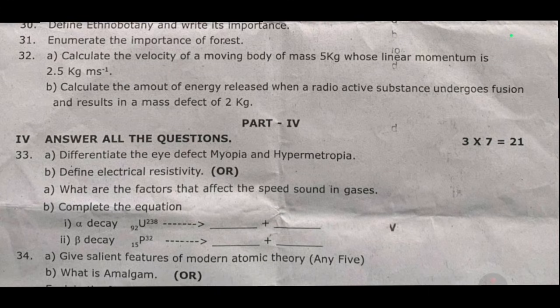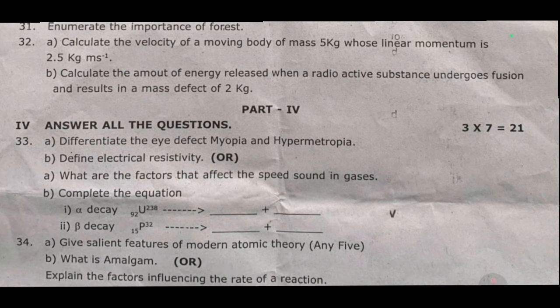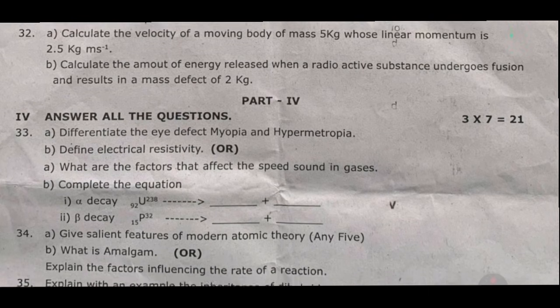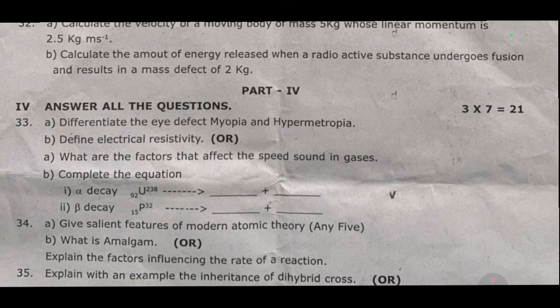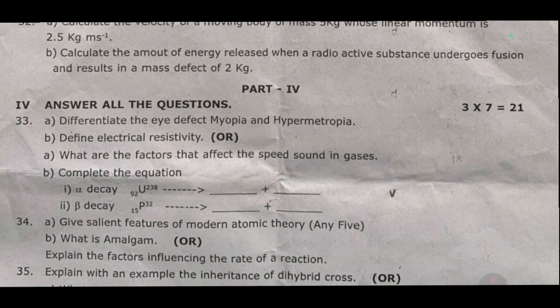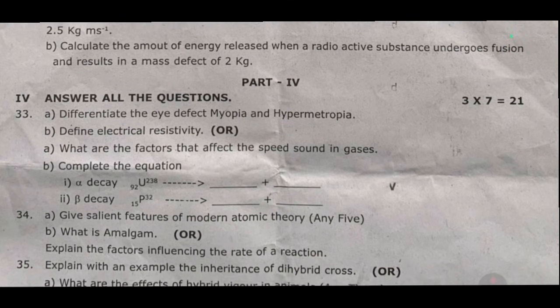Thirty-four: give the salient features of modern atomic theory — any five points. B: what is amalgam? Or option: explain the factors influencing the rate of a reaction.